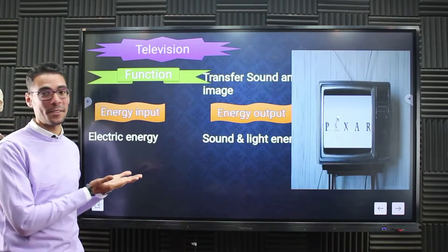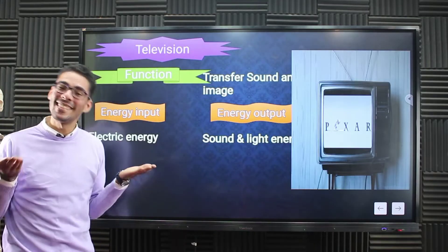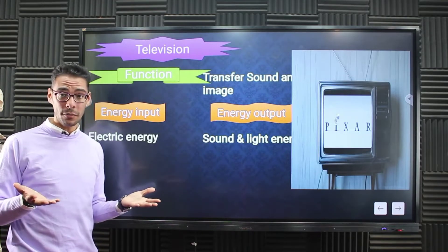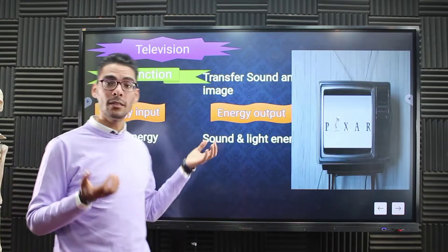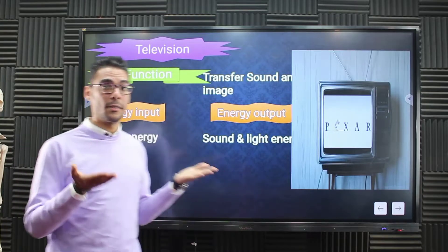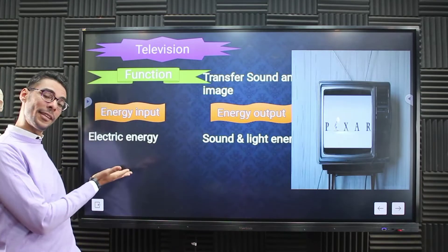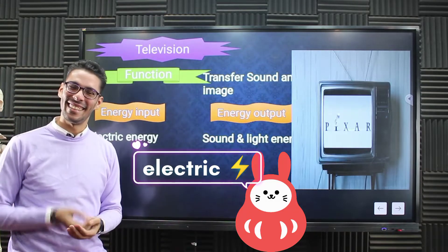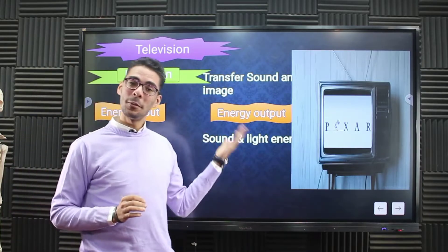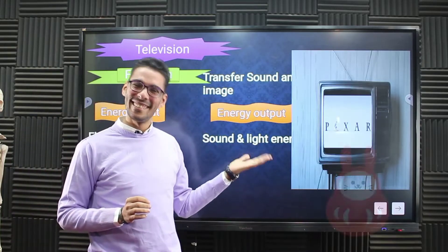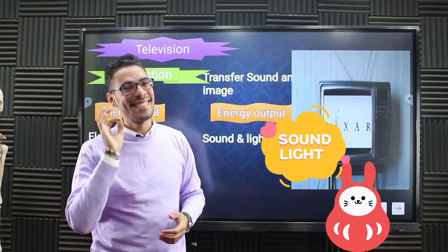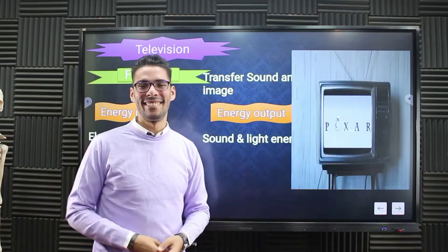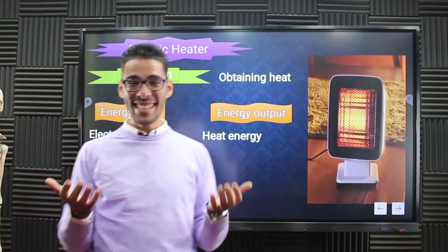The TV is the next one. The input energy is simply electric energy, which the TV converts into sound and light. So the input energy is electric energy and the output energy is sound and light.